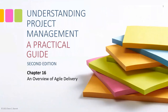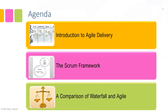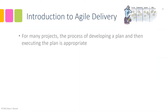Hello, and this is the video lecture for Understanding Project Management: A Practical Guide, Second Edition, Chapter 16 — an overview of agile delivery. To this point the focus has been on project management using more traditional methods. In this video lecture we're going to look at another form that projects may be completed, known as agile. First, an introduction to agile delivery; second, a specific framework called scrum; and finally, differences and similarities between waterfall and agile methods.